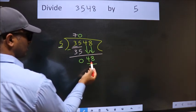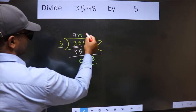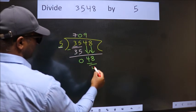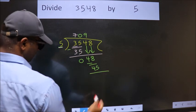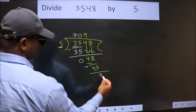A number close to 48 in the 5 table is 5 times 9, which is 45. Now we subtract. We get 3.